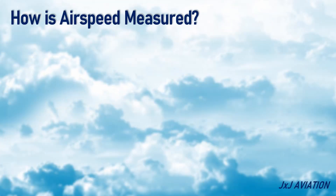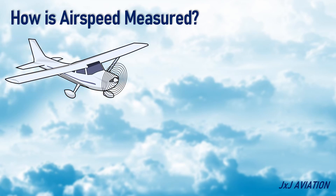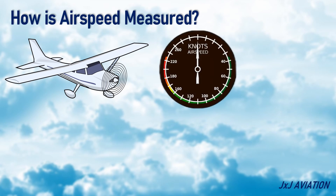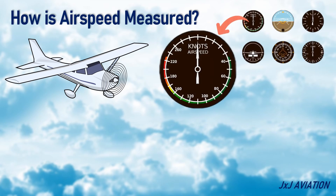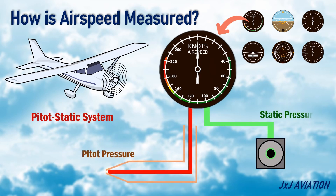First, let's understand how airspeed is measured in an aircraft. The airspeed of an aircraft is displayed on an airspeed indicator. This is one of the six basic instruments in an aircraft. This instrument uses the pitot-static system to collect the pitot pressure and the static pressure.